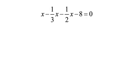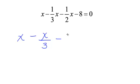This is a linear equation, but it looks a little bit tough because of all of those fractions. I'm going to choose to multiply by the least common denominator and get rid of those fractions. So let's rewrite this: x minus 1/3 x, or x over 3, minus 1/2 x, that's x over 2, minus 8 equals 0.